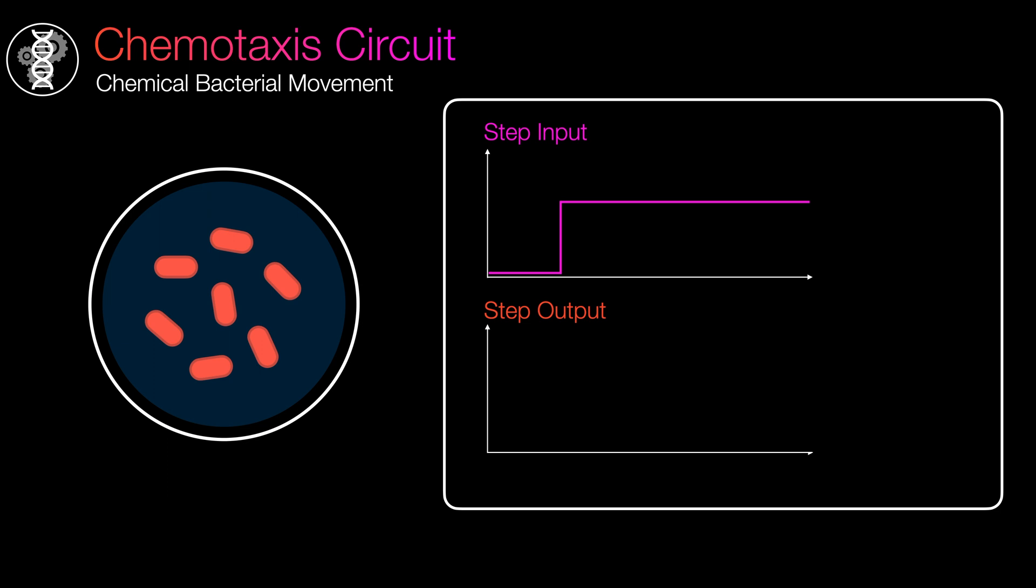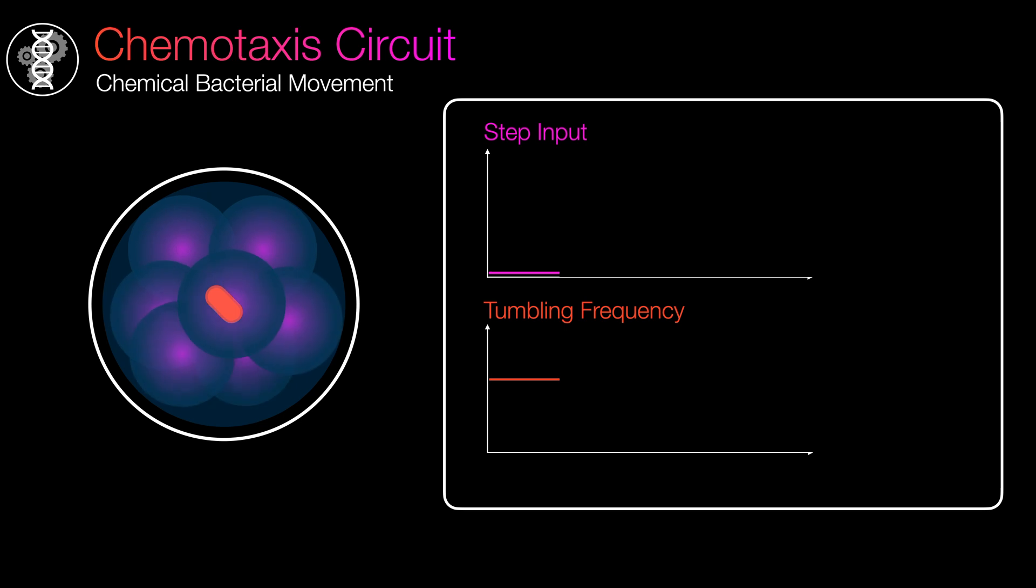The response to this input is known as the step response. And the response we are looking for is how often the bacteria tumbles, also known as the tumbling frequency. To conduct the experiment, we place the bacteria in a plate of water and simultaneously open up all the floodgates, ensuring that every bacterium experiences the same condition. Initially, there is a significant reduction in the bacteria's tumbling frequency.